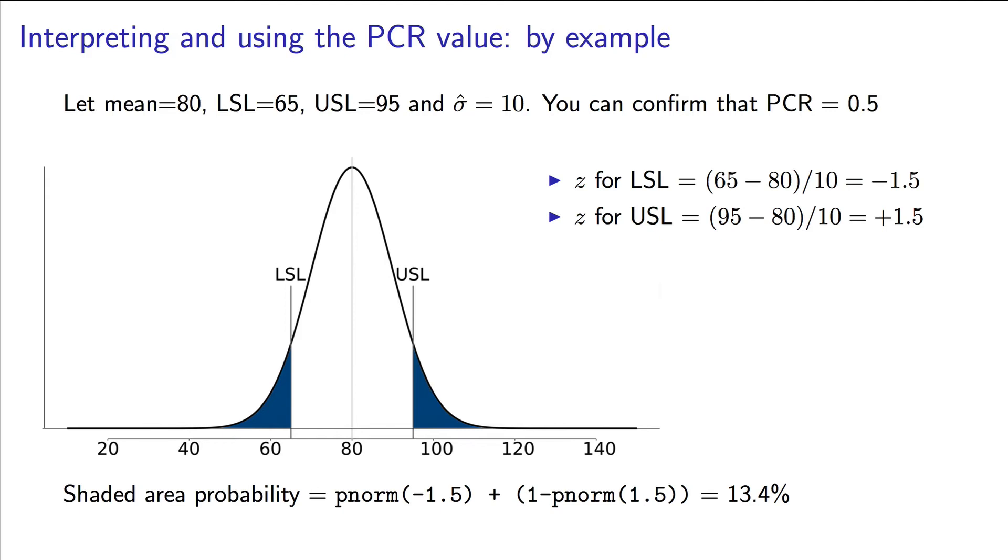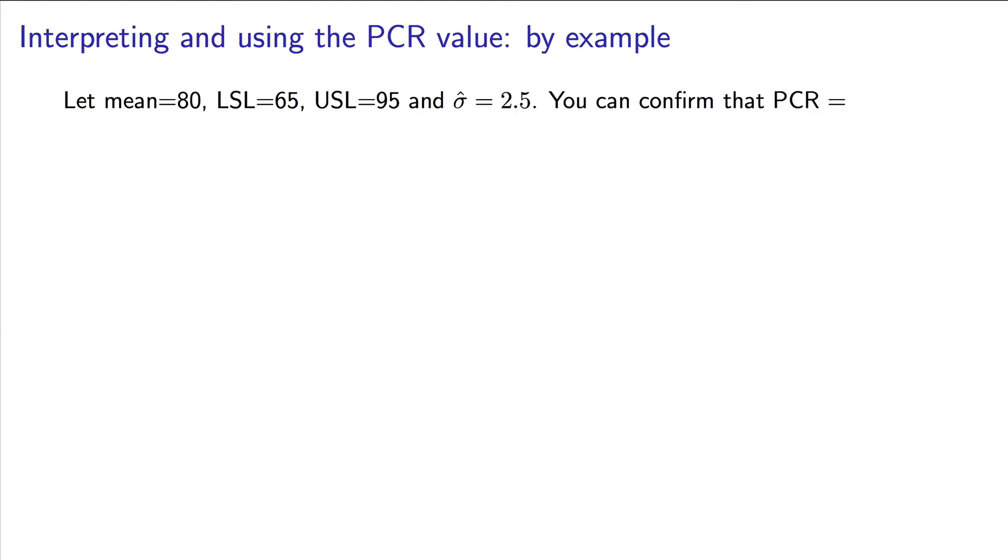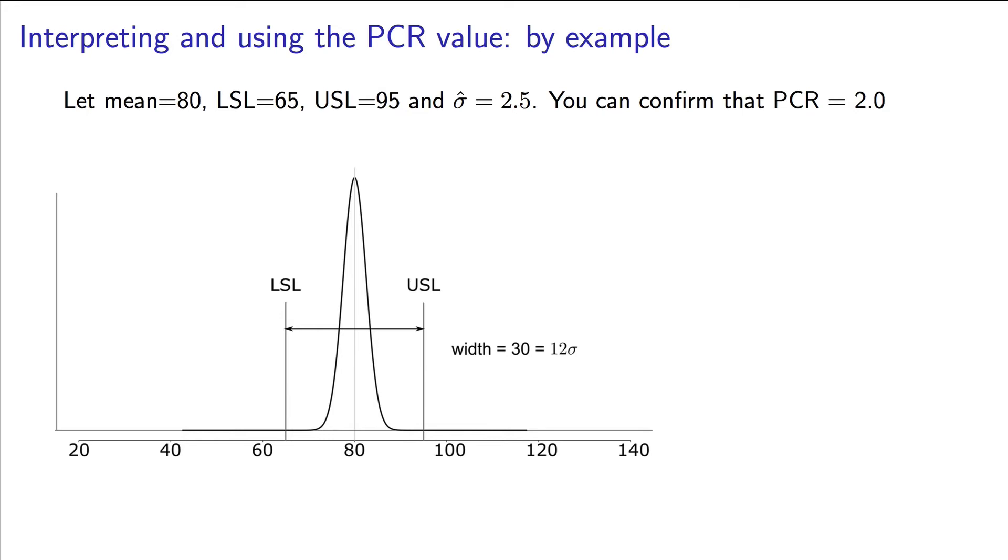Let's try it with a different system. This time the mean is still 80, the lower spec limit is still 65, and the upper spec limit is 95. But let's see what happens if we're able to reduce the variability in our process four times. That's a sigma, this time, of 2.5. So go ahead and calculate the PCR for that case. You should have got a value of 2, and let's illustrate that again. This time notice how narrow that distribution is, and how well it lies within the specification limits. The z value for the lower and the upper spec limits are plus and minus 6 units, and so the shaded area is almost unobservable. So what we've learned from these two case studies is that a higher process capability ratio is more desirable. Perhaps you can now even see why it is called the process capability ratio.